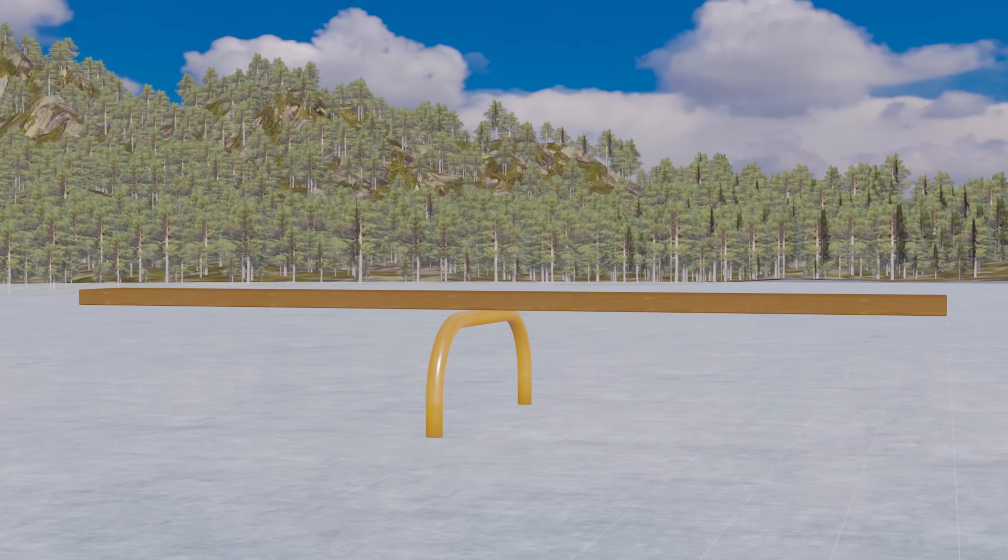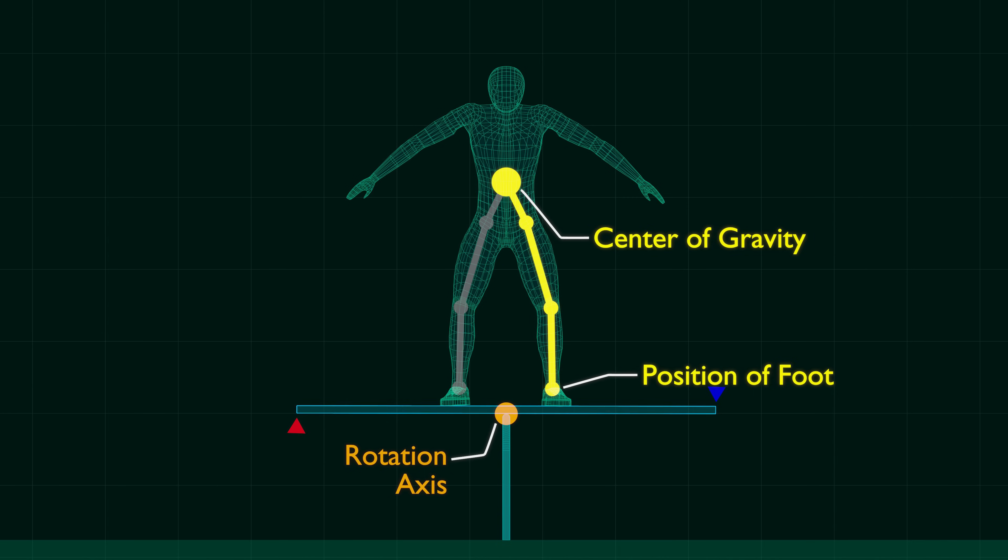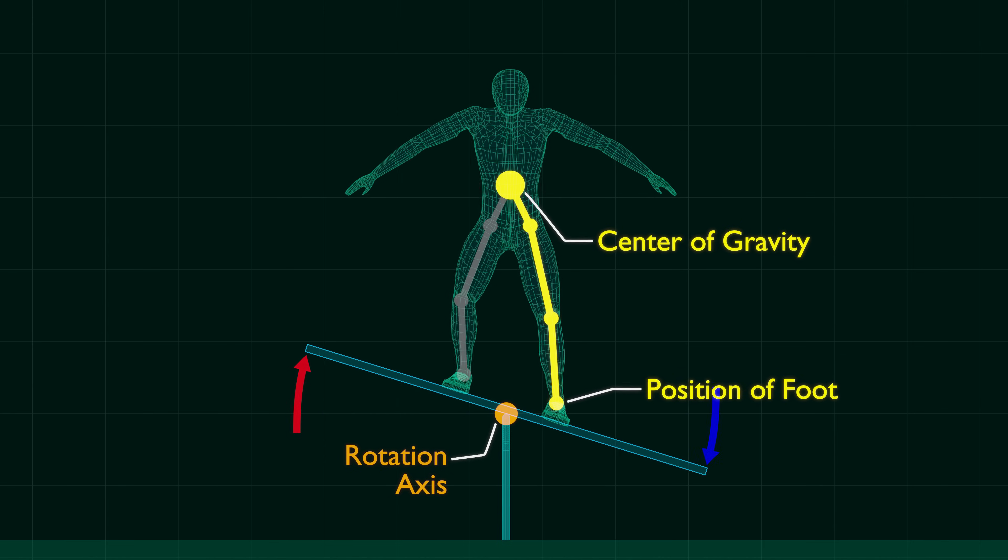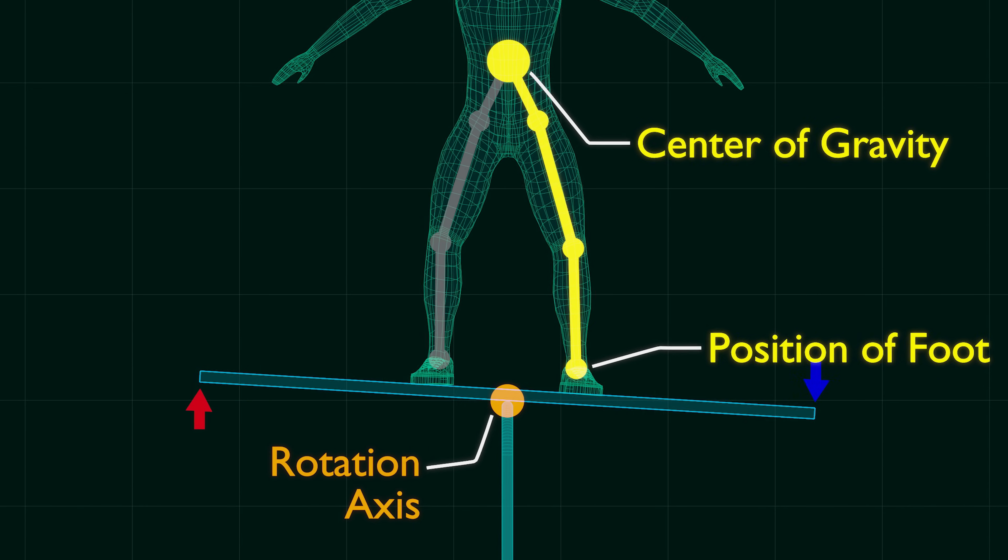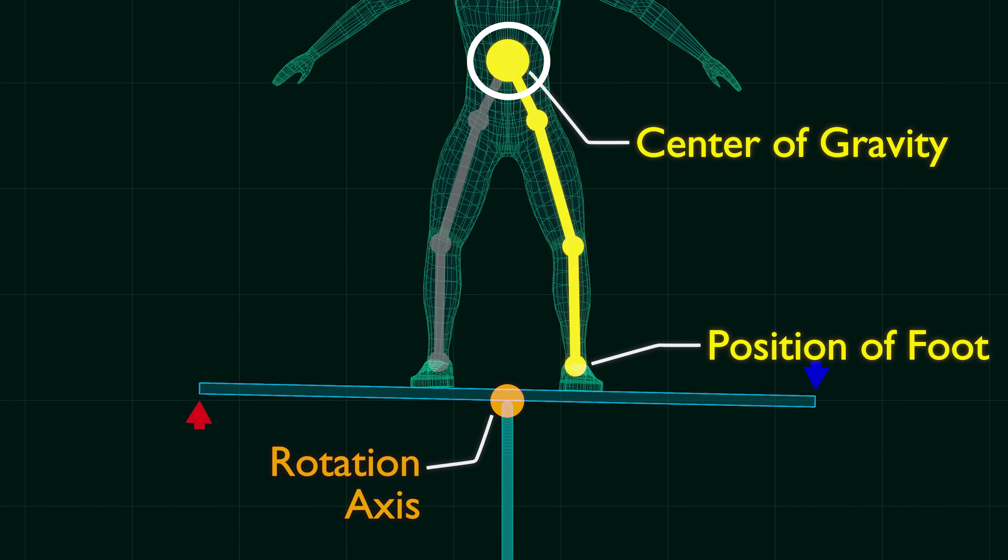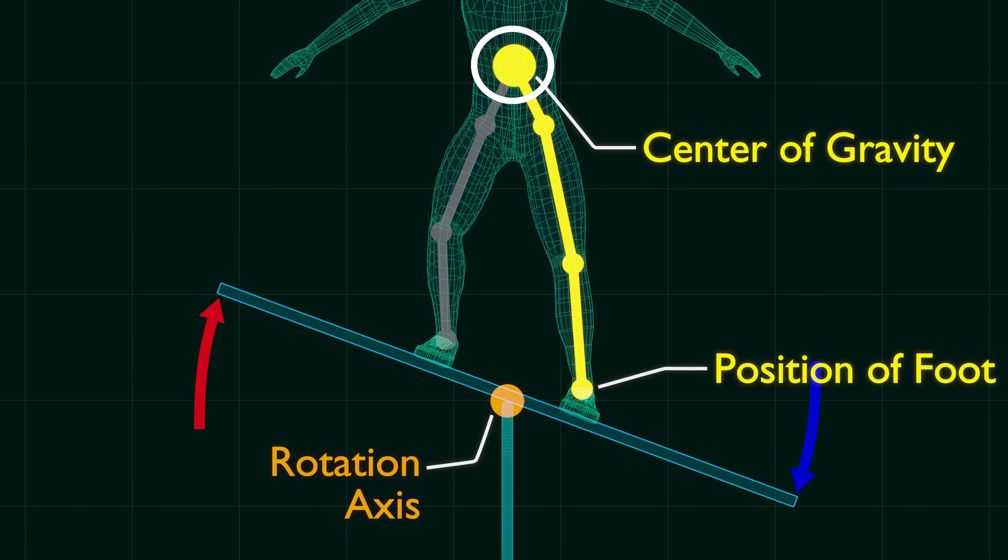Let's consider the first point using an example of a seesaw. When you press one foot down on a seesaw, its plank rotates in the direction, and the opposite side lifts, while the center of gravity remains at the same position.